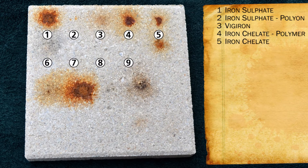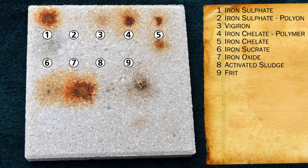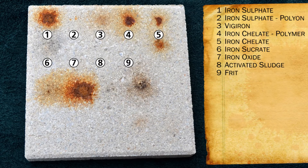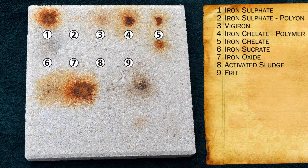Numbers six, seven, eight, and nine are iron sucrate, iron oxide, activated sewage sludge, and frit — which is a combination product. No staining occurred from any of these. The reason is that the sucrate and oxide are essentially the same product; the sucrate has been ground up and re-aggregated using a sugar, so it's still an oxide. They've already been oxidized and gone through that transformation, so there's no staining to occur.